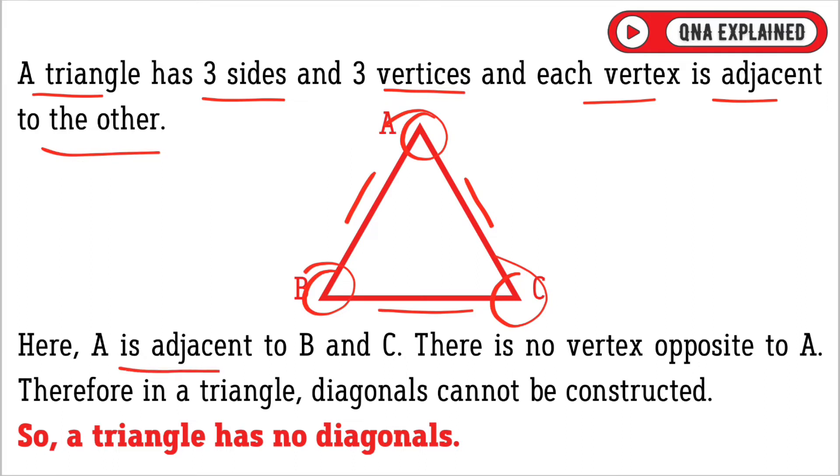Here, A is adjacent to B and C, there is no vertex opposite to A.